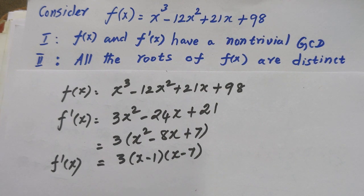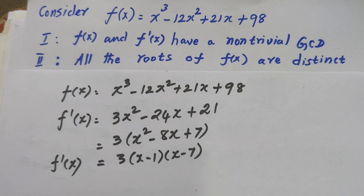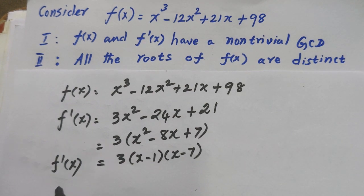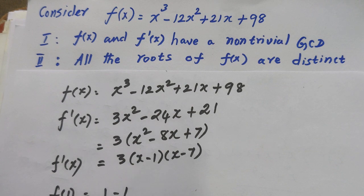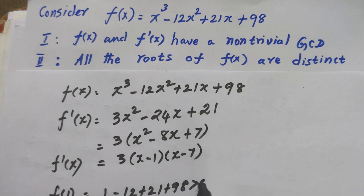Substituting x equals 0 into f of x gives f(0) equals 98, which is positive. Substituting x equals 1 gives 1 minus 12 plus 21 plus 98, which is greater than zero, so x equals 1 is not a root.